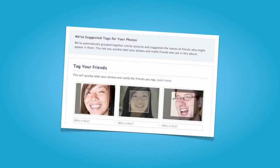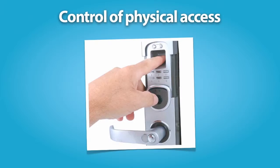Biometric systems are currently being used for a variety of purposes, such as control of physical access to spaces. Examples include access to military bases, nuclear plants, prisons, and restricted areas in airports and hospitals. Biometrics such as thumb and palm prints are replacing badges and access codes, which can be stolen.